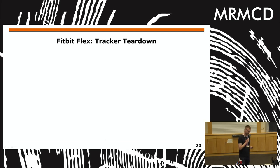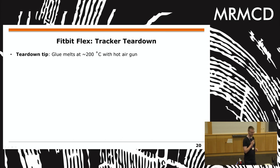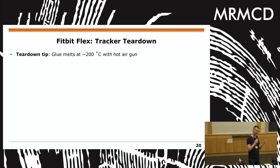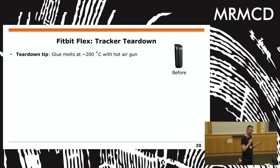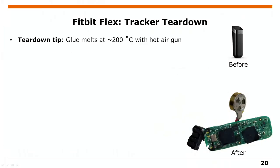First we need to tear down the tracker. A tip: use a heat gun at about 200 degrees — you can basically just pull the PCB out of its casing, rather than using a Dremel. It works much better. The tracker still works fine afterward even with some pieces missing. Looking at the PCB, there are many test points, which suggests debug functionality.